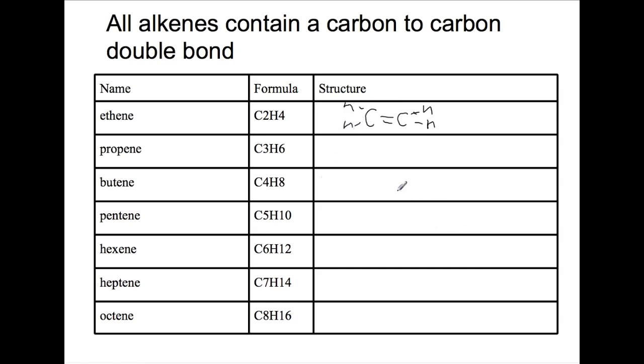All carbons still have to have four lines, four bonds coming out of them. Propene has three carbons. You have to take care when drawing the alkenes that you do not end up with carbons with too many bonds. This one here already has four so it doesn't need another hydrogen.